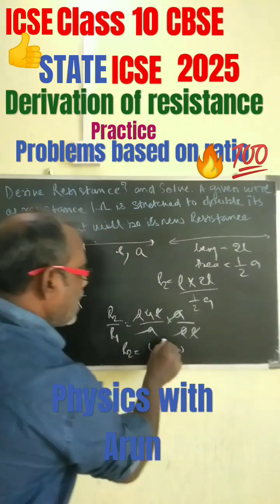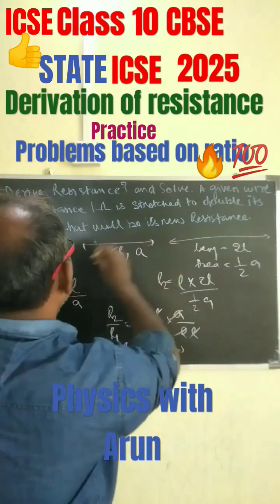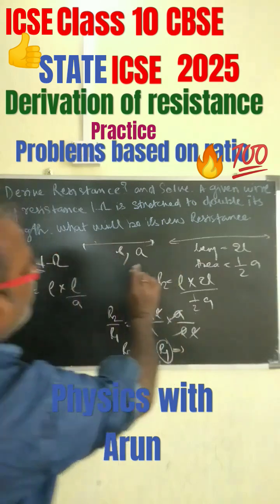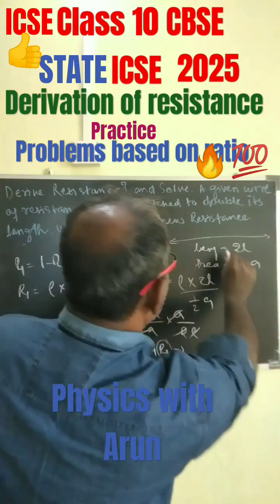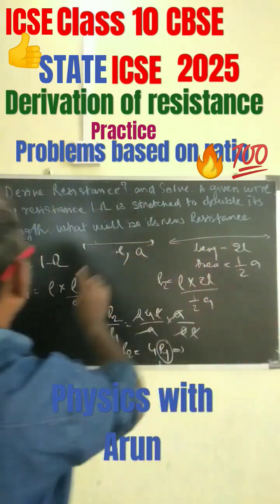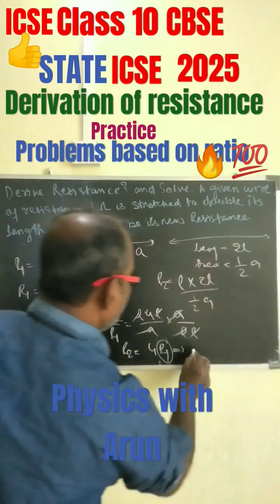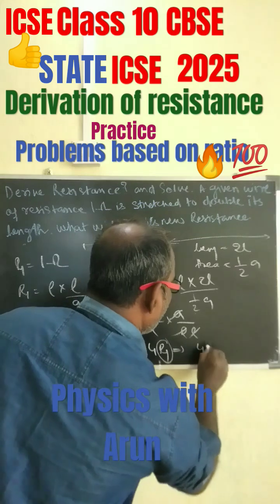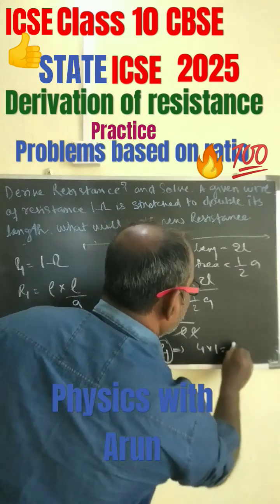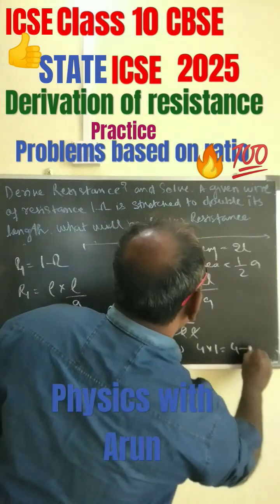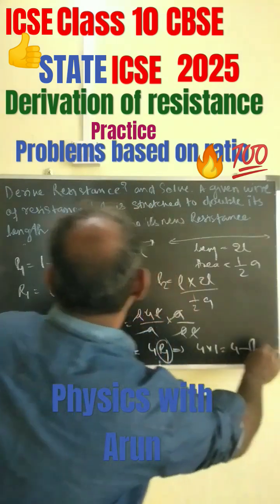R2 equals 4 R1, and since R1 is given as 1 ohm, this equals 4 into 1, which is 4 ohms.